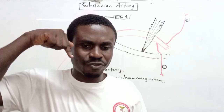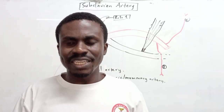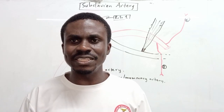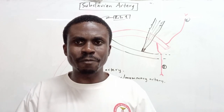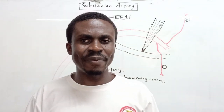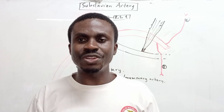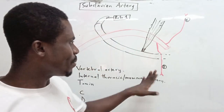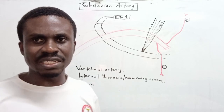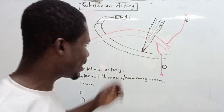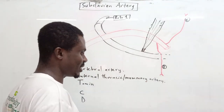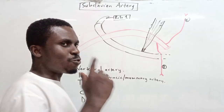The internal thoracic artery also gives another terminal branch that goes downward, leaves the thoracic cavity, enters the abdominal cavity through the foramen of Morgagni, and becomes the superior epigastric artery. If you haven't watched the video on intercostal neurovasculature, please do so to understand these branches better.